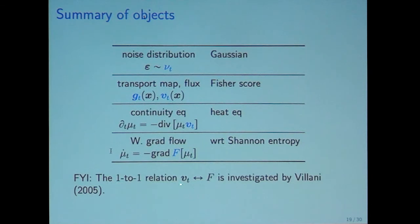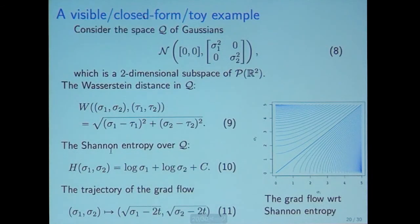There's one-to-one relation between V T and F. This is one excellent visible closed form toy example. Consider the space Q of Gaussians of form mean zero, and the covariance matrix is limited to diagonal covariance matrix. This is a two-dimensional subspace of all probability densities on R^2.